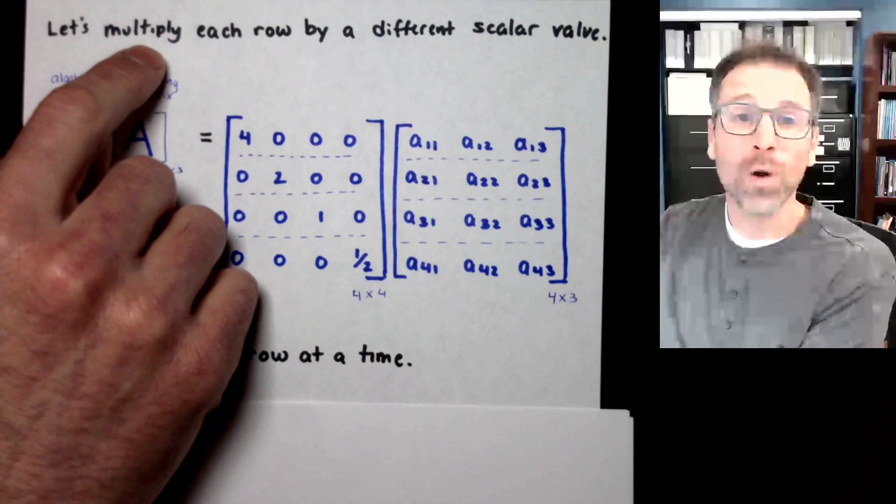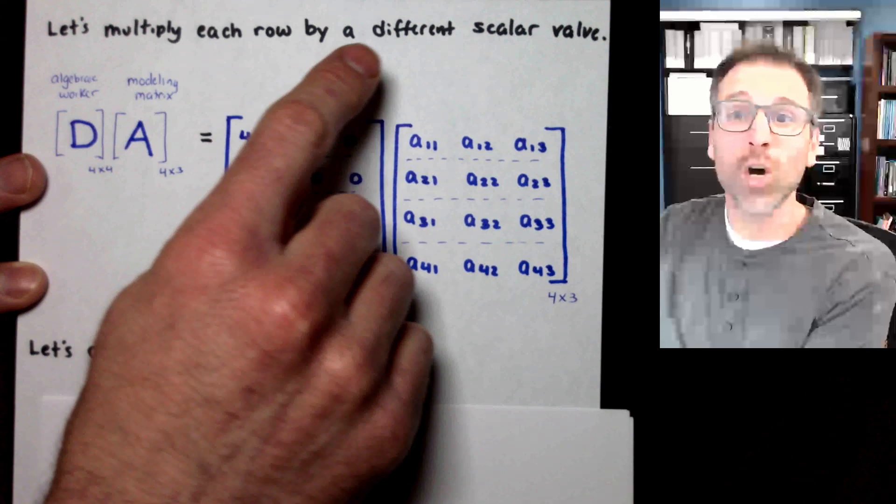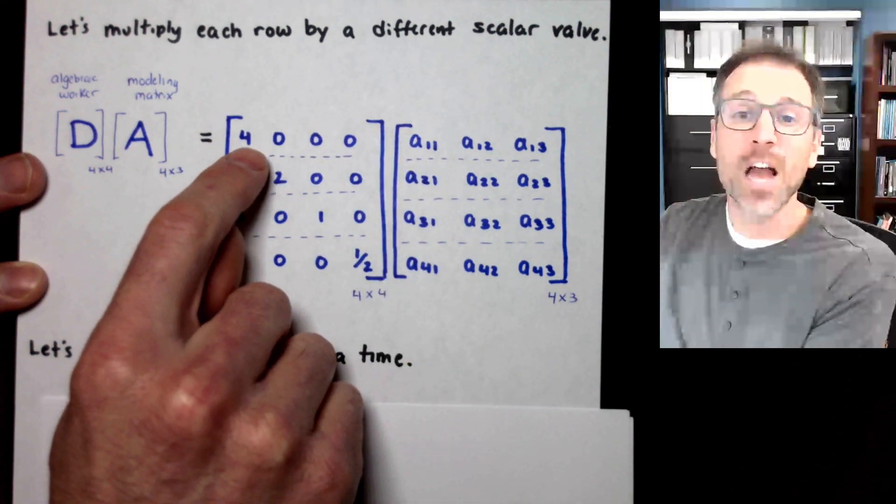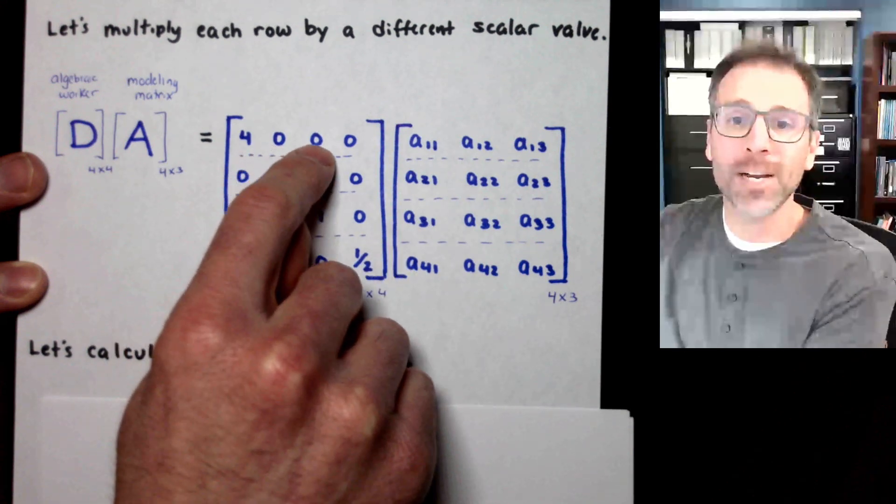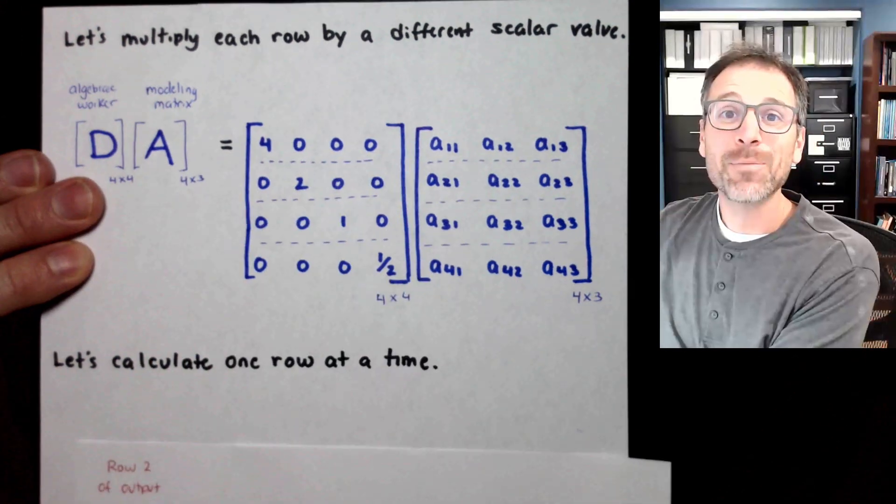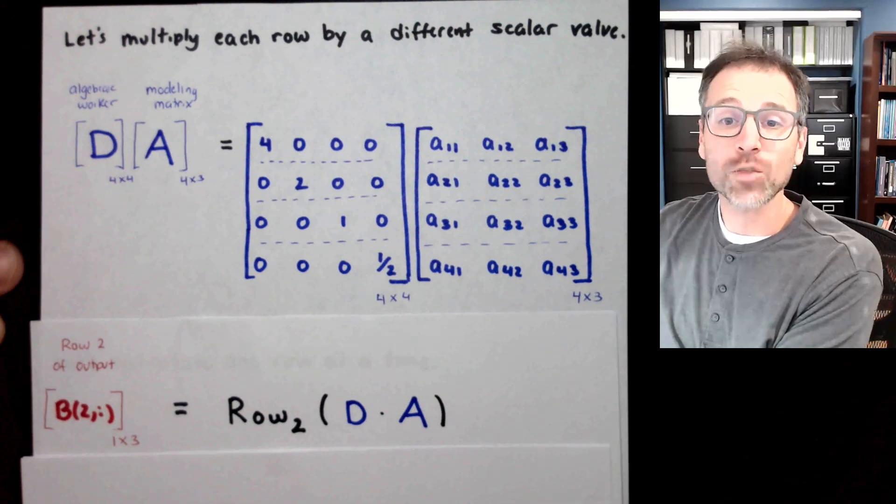Remember, that satisfies part of what we wanted to do. We wanted to multiply each row by a different scalar. So in this case, we multiply the first row by 4. We don't have any of the other rows showing up in that linear combination because all of those are 0. Let's keep going down. We'll calculate the next row of our output.